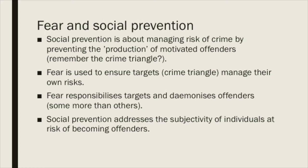Social prevention is about managing the risk of crime by preventing the production of motivated offenders. This links back to Felson's crime triangle discussed in week two. Fear is used to ensure that targets in this model manage their own risks. Fear responsibilises targets and demonises offenders, although some more than others. Social prevention addresses the subjectivity of individuals at risk of becoming offenders, addressing the motivated offender aspect by using distal or more distant social structural factors.